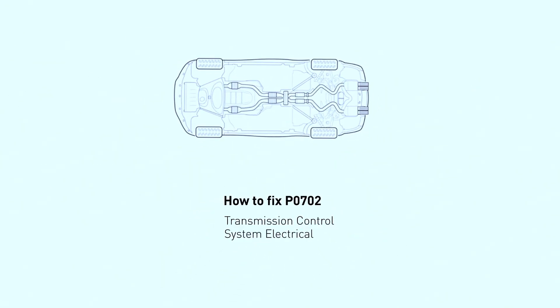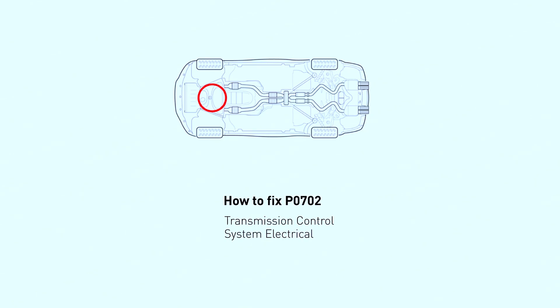The PO702 code signifies a malfunction in the electrical side of your transmission's control system. This can involve several components, including sensors, solenoids, and the transmission control module TCM. Symptoms you might experience include rough shifting, delayed gear changes, and even a complete lack of shifting.